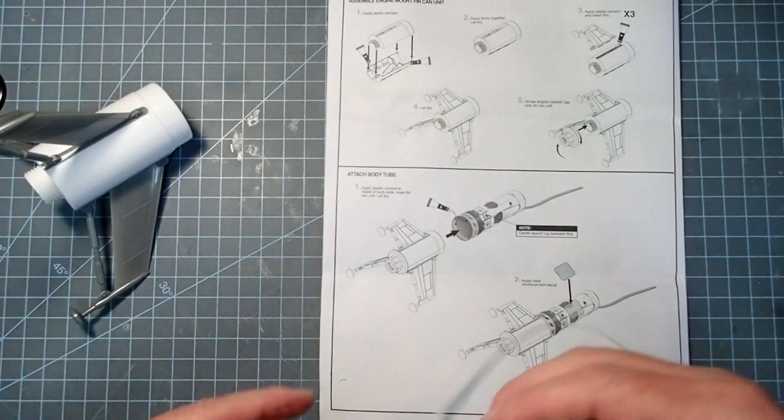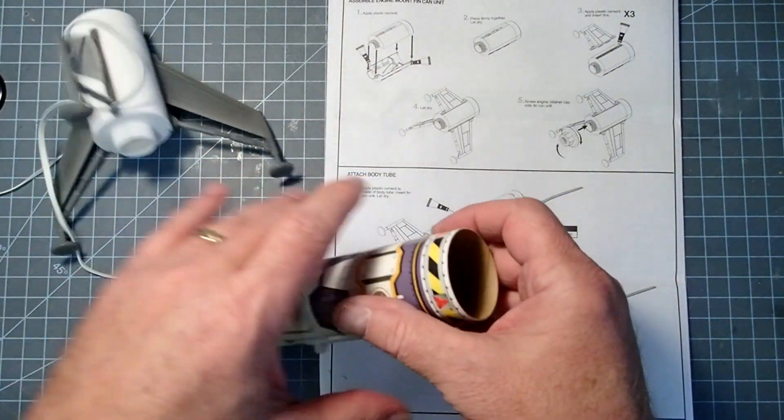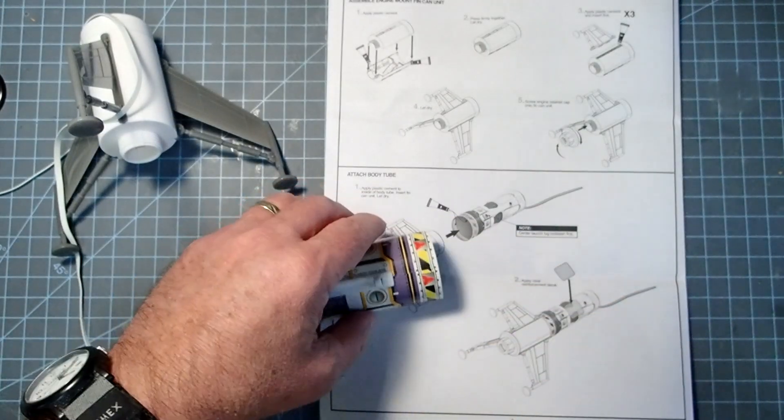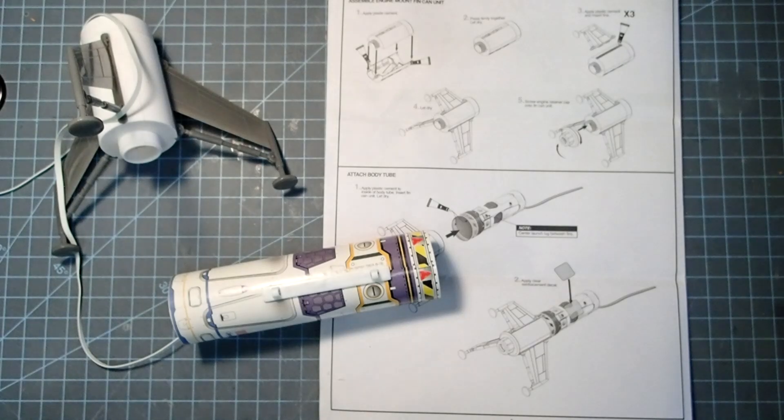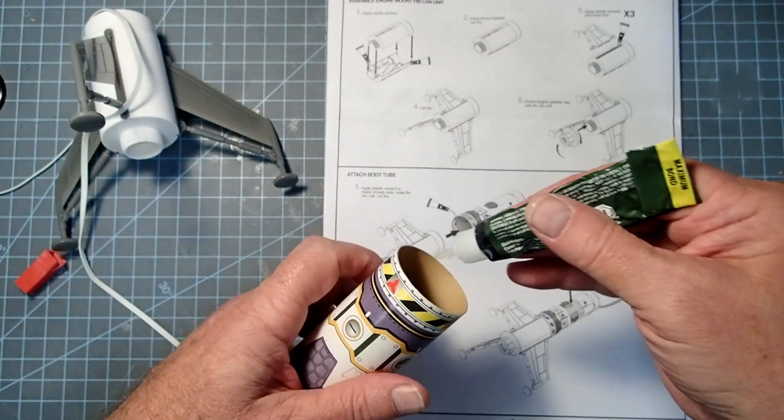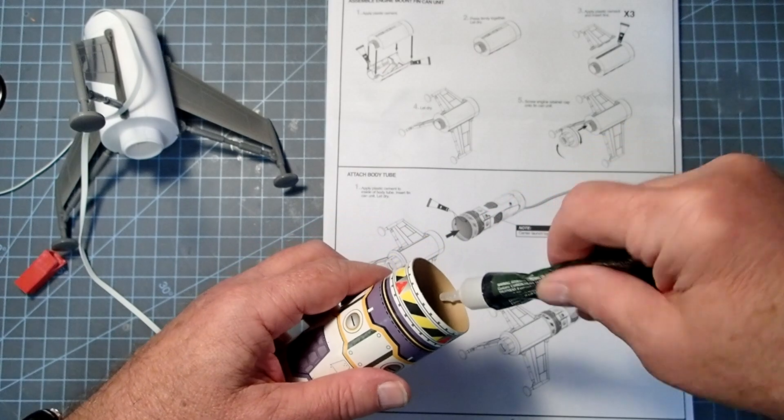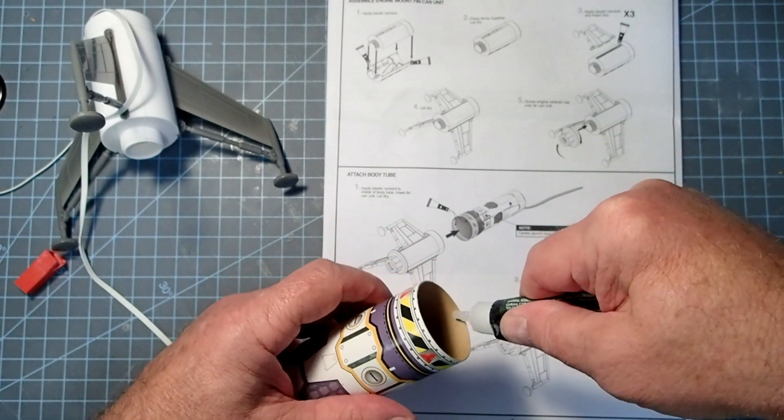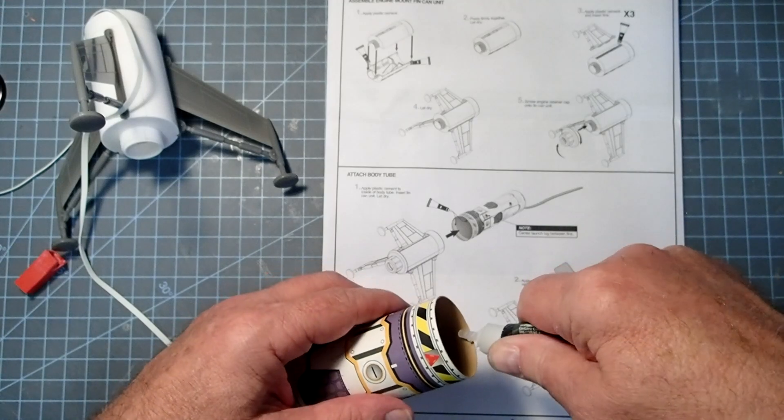Now they use the tube type cement inside here as well. My preference is to use a gel type super glue. I just find it works better for joining plastic to cardboard, but you can use either. Either one you use, it's going to be the same.